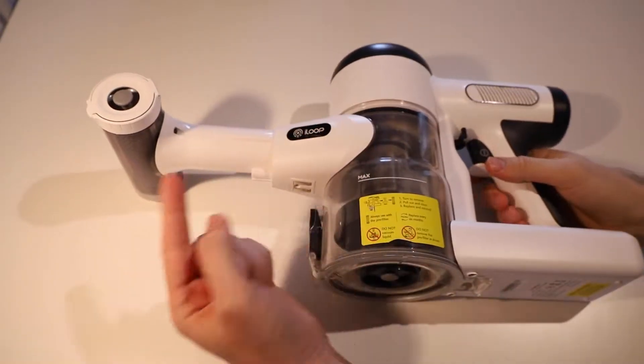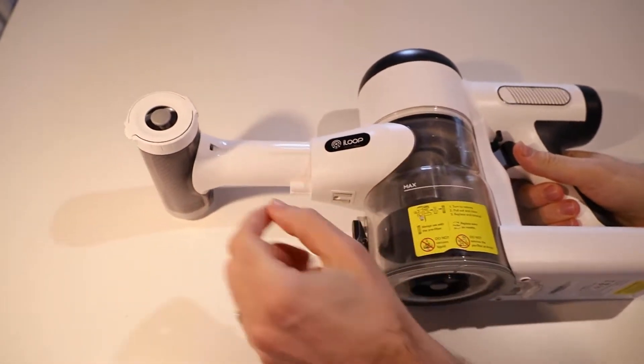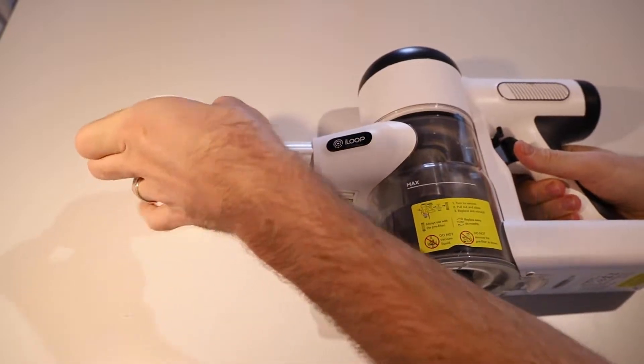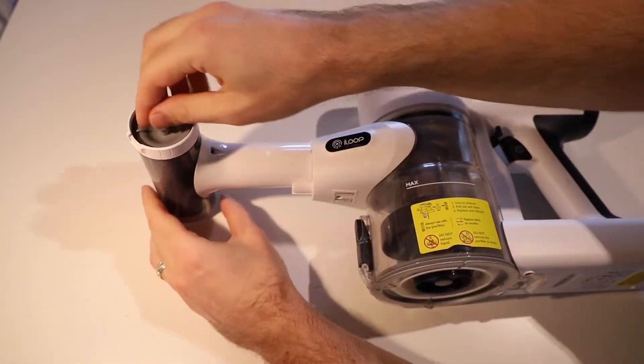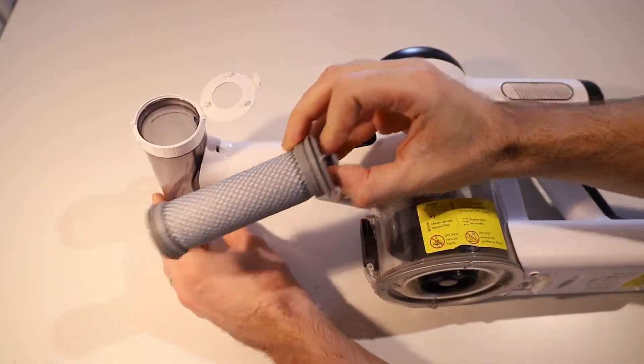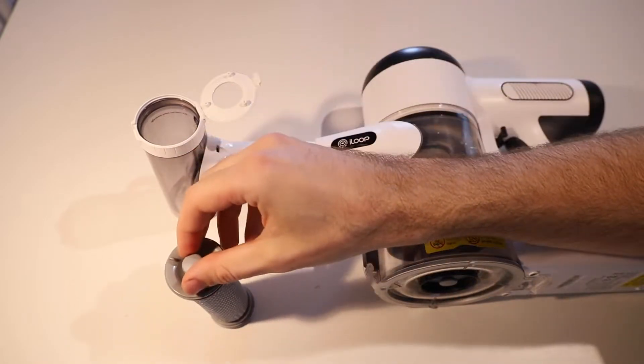I've got here the Tineco Pure One X with the filter cleaning attachment on it. And it, of course, has inside it my clean filter. So I'll be using this one to replace the filter inside to clean it out.